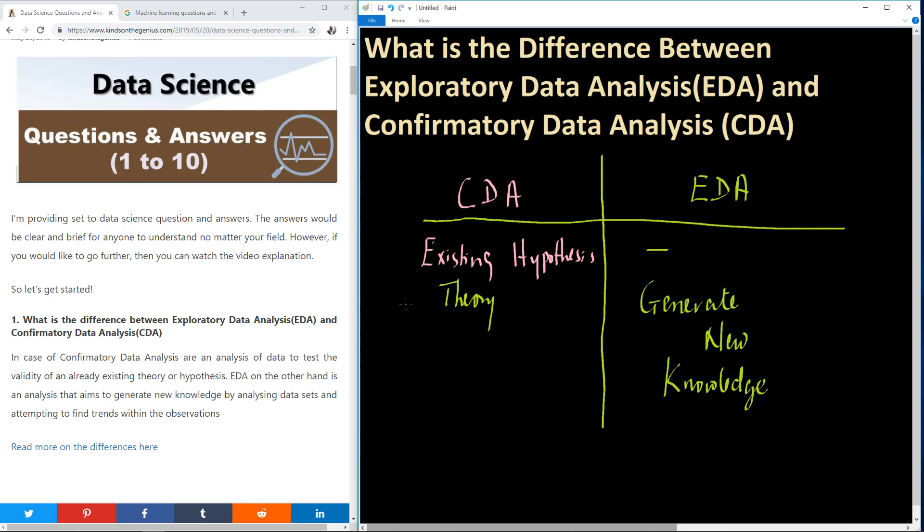In case of exploratory, you may hear of something like H0 in trivial hypothesis testing, and you have H1. This is called existing hypothesis.